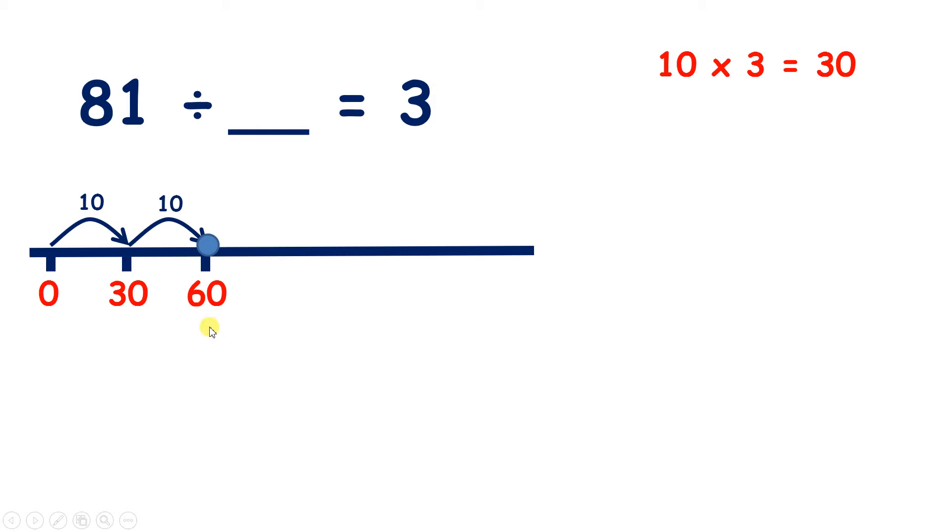And we don't want to keep on counting in steps of 30, because our next jump would take us to 90, and that would be too many.